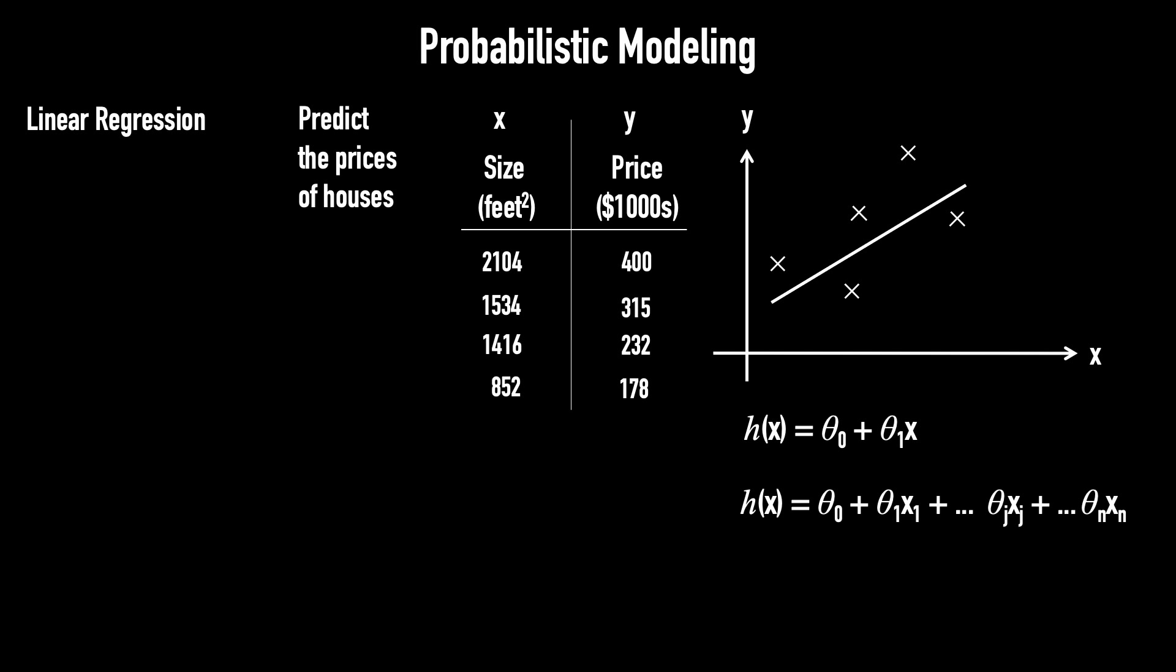If we have multiple features, we add x₁, x₂, and so on, up to xₙ. The summation form looks like this, and in vector form, we write it as h(x) = θᵀx, and this is the form we'll use throughout this lecture.